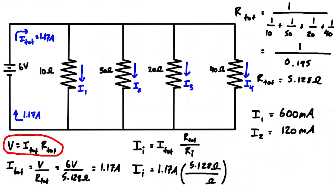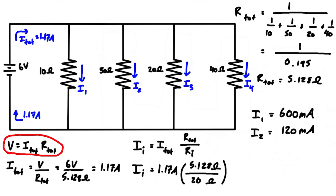For resistor 3, we put in 20 ohms. Crunching the numbers, I3 equals 0.3 amps, and 0.3 amps is the same thing as 300 milliamps.